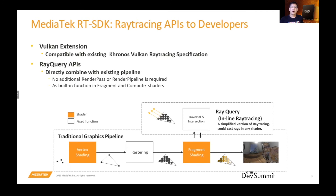The ray tracing API in our SDK is provided as a Vulkan extension. We chose RayQuery as our ray tracing API in the initial version because it is easier to integrate with existing graphics pipelines — no additional render path or render pipeline is required. The developer only needs to add the ray tracing logic block into the existing fragment shaders or compute shaders, and then the ray tracing effect can be added into the application. This will be very easy.